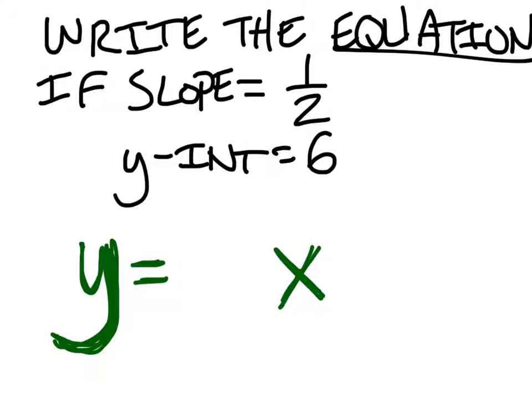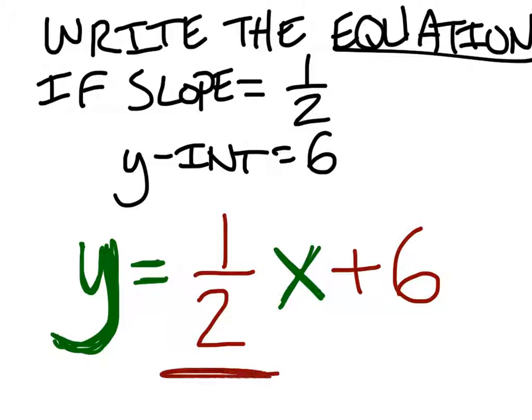What is it? Is it y equal to one half of x plus 6? Done. Notice, one half is your slope and six is your y-intercept. It's a positive. Positive six. This is the equation. Done.